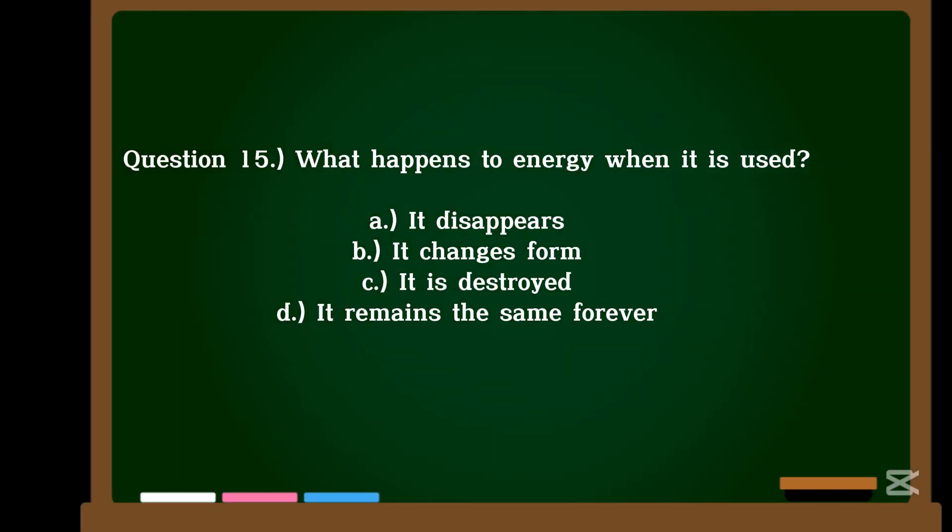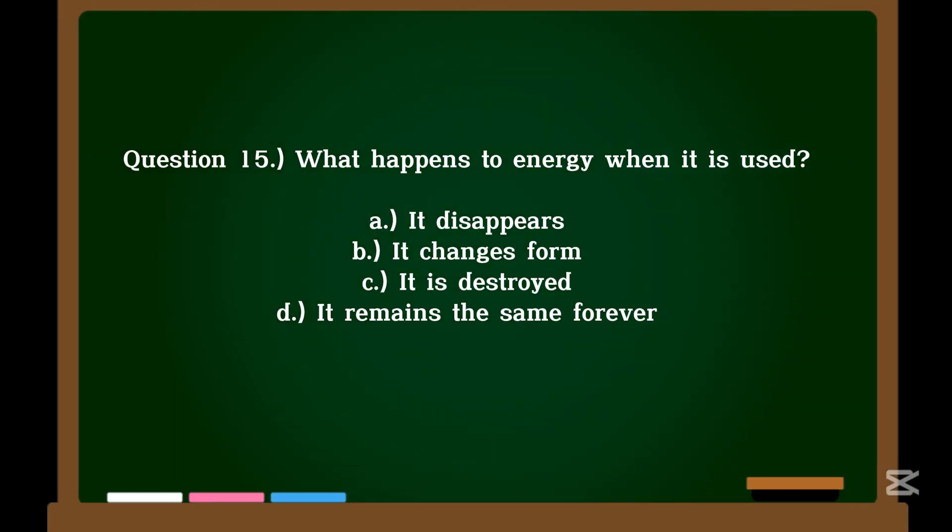Question 15. What happens to energy when it is used? A. It disappears. B. It changes form. C. It is destroyed. D. It remains the same forever.